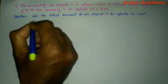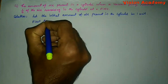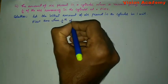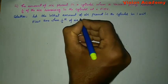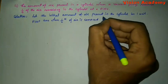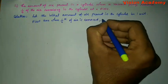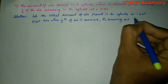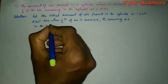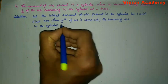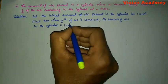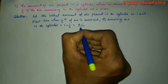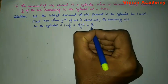First time when one fourth of air is removed, the remaining air in the cylinder is equal to 1 minus 1/4, which is equal to 4 minus 1 over 4, giving us 3/4.